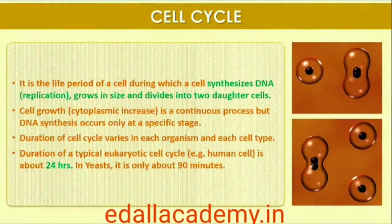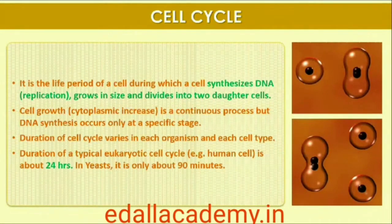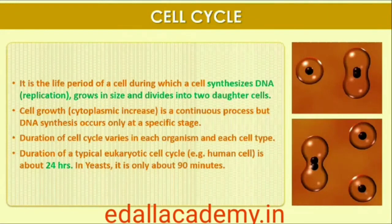All these processes — cell division, DNA replication, and cell growth — have to take place in a coordinated way to ensure correct division and formation of progeny cells containing intact genomes. The sequence of events by which a cell duplicates its genome, synthesizes the other constituents of the cell, and eventually divides into two daughter cells is termed the cell cycle.